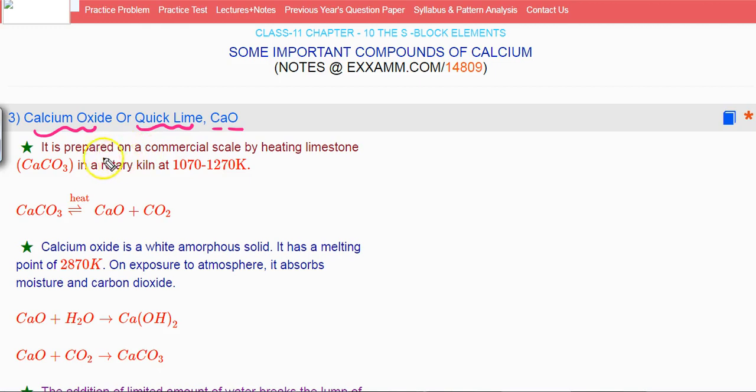Calcium oxide can be prepared on a commercial scale by heating limestone in a rotatory kiln at a temperature of 1070 to 1270 Kelvin. When calcium carbonate is heated, it decomposes into calcium oxide and carbon dioxide.